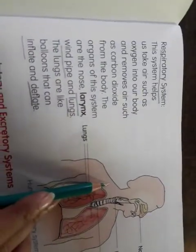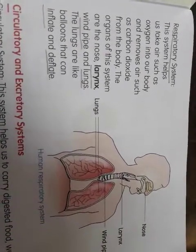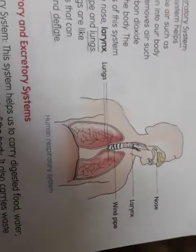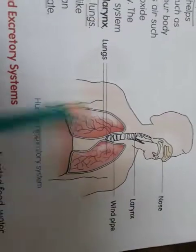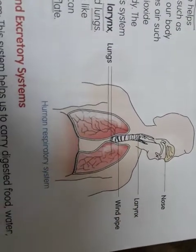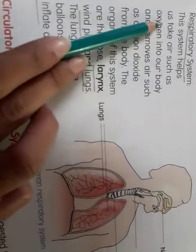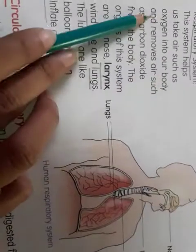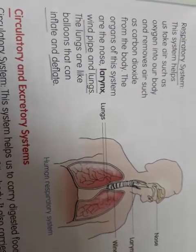Next is the respiratory system. The respiratory system helps us in breathing. The organs of the respiratory system are: nose, larynx, throat, and windpipe. The respiratory system helps us take air such as oxygen into our body and remove air such as carbon dioxide.